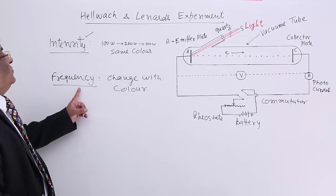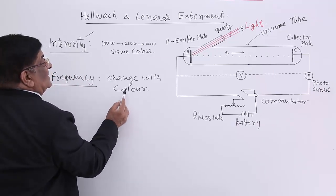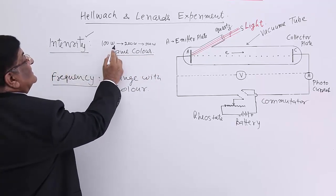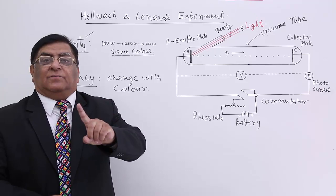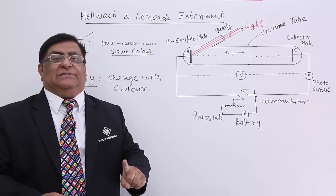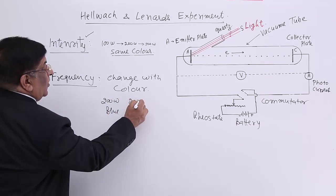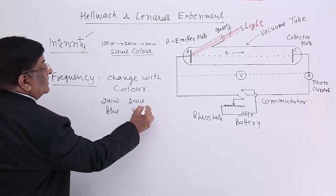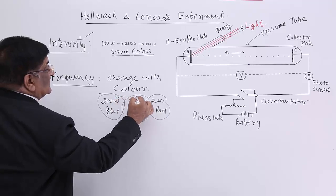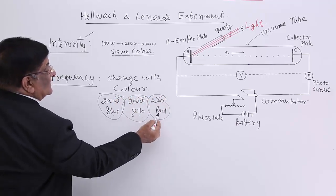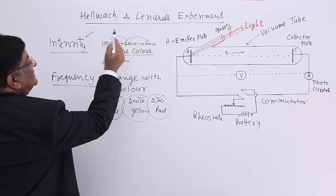Now, if I don't want to change frequency but want to change intensity: keep the same color and go for a higher wattage bulb. If I want to keep intensity constant but change frequency: put a 200 watt blue bulb, then 200 watt yellow, then 200 watt red. In this case, intensity is constant and frequency is changing. With the same color, frequency is constant and intensity is changing.